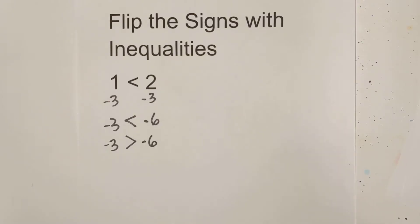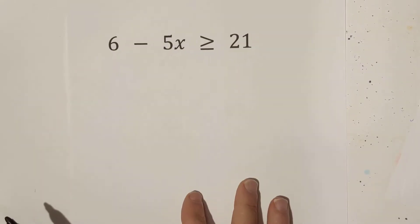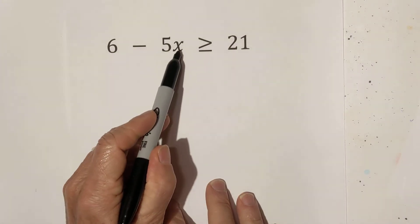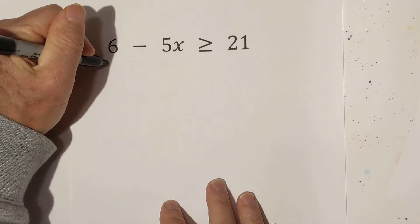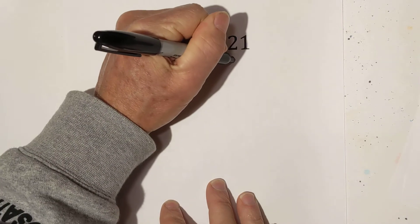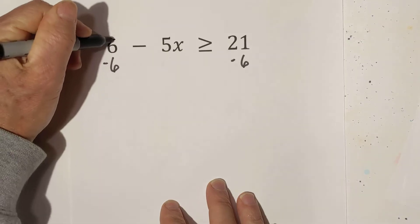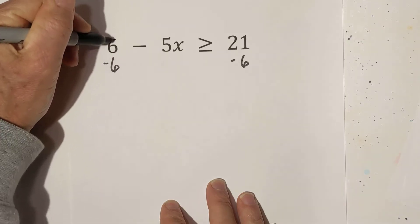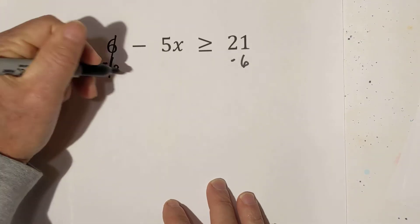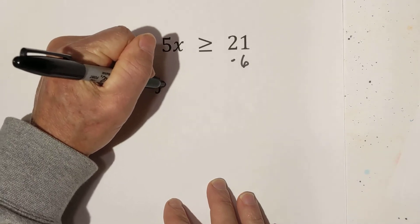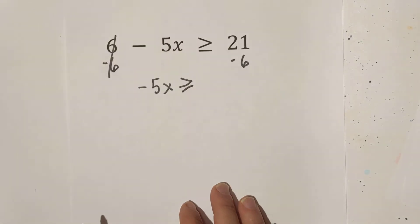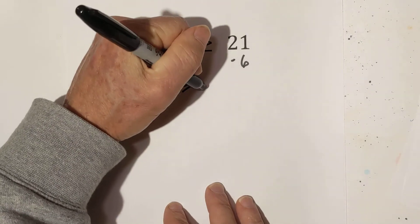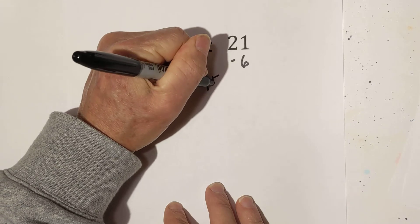Let's work a couple of examples, and then one where you will not flip the sign. We need to get x isolated, so we're going to begin by subtracting both sides by 6. The 6s cancel, and we have negative 5x is greater than or equal to, and 21 minus 6 is 15.